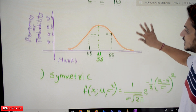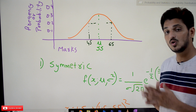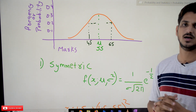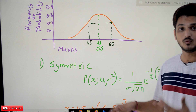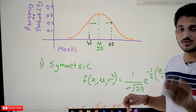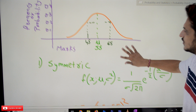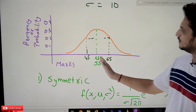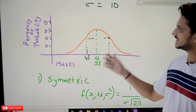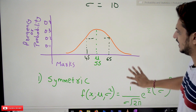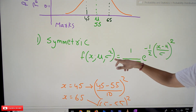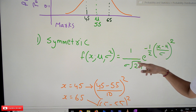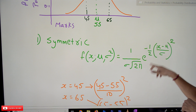Now, in our last class we said that normal distribution always follows a symmetric distribution. Why does it follow a symmetric distribution? With the probability density function we are going to understand. Our mean value is 55 and standard deviation is 10. The probability density function f(x, μ, σ²) is written as: 1 divided by σ times the square root of 2π, times e to the power of minus one-half times ((x − μ)/σ)².